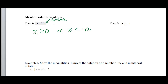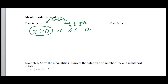Remember, absolute value means the distance from zero. So I want to know which values of x are going to be greater than this number of units from zero. Greater than means it has to be bigger than this positive number, but also on the left-hand side it has to be less than. And if I were to draw it on a number line, let's say that this is zero, this is a, and this is negative a. Then the values that are bigger than a are going to be greater than — that's where we get this piece of our inequality from.